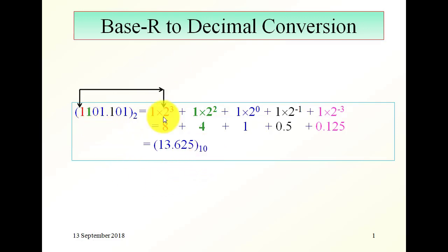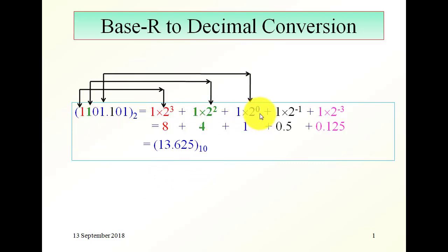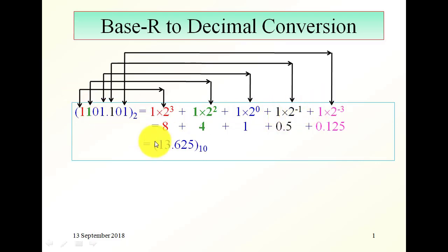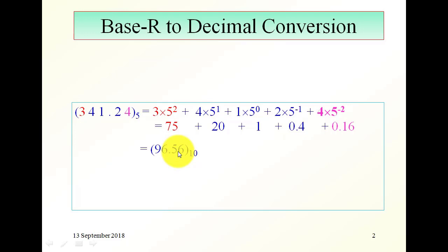This here is the value for this number, and this is the value for this number. We add the values for the numbers, or the digits in the number, and we get the final result.